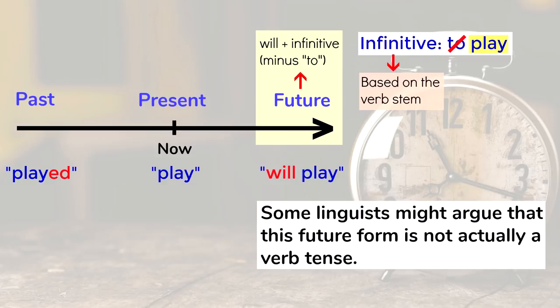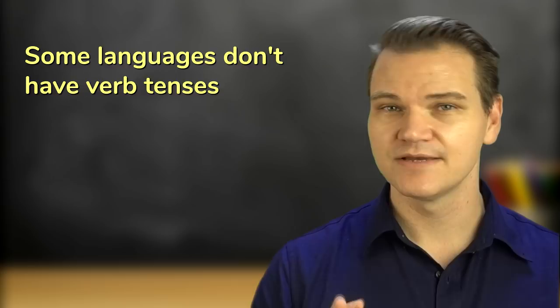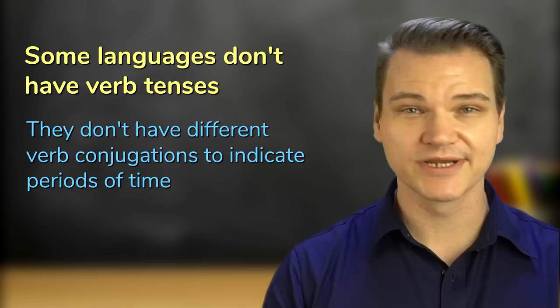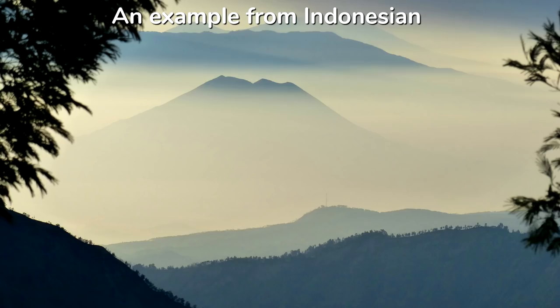But some languages don't have verb tenses, meaning they don't have different verb conjugations to show periods of time. This is true of many Creole languages, for example, of Indonesian and Malaysian, of Chinese, of many Native American languages, and a lot more. Here's an example from Indonesian.